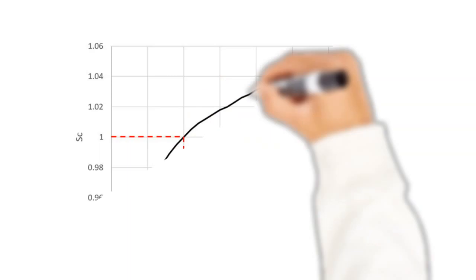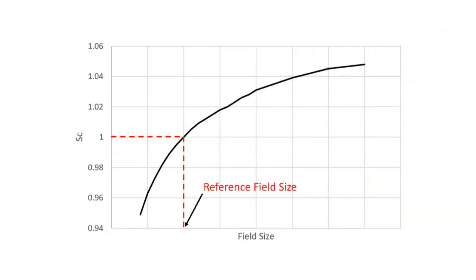If you measure the collimator scatter factor for multiple field sizes, you'll get a plot that looks something like this. For field sizes smaller than the reference field, the collimator scatter factor is less than one. But for field sizes greater than the reference field size, the collimator scatter factor increases above one. By definition, the collimator scatter factor for the reference field is one.